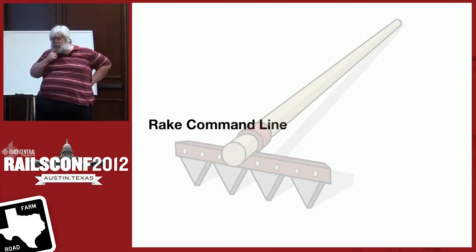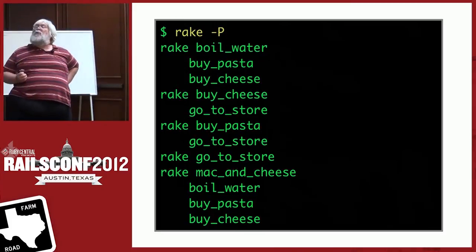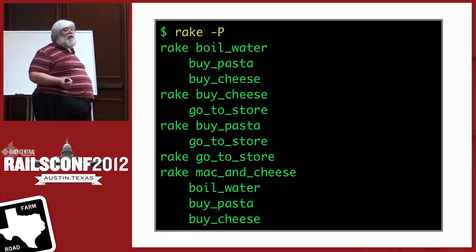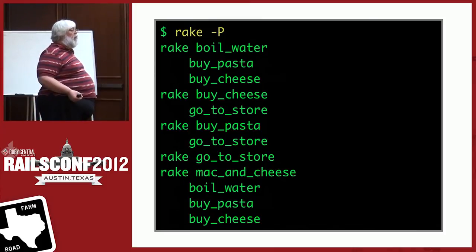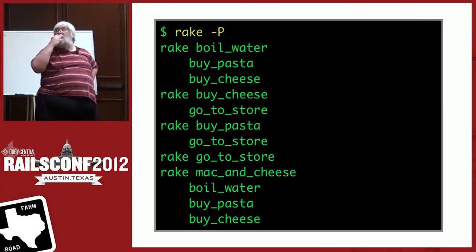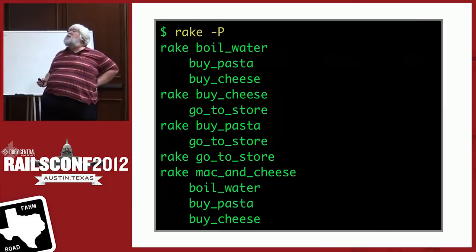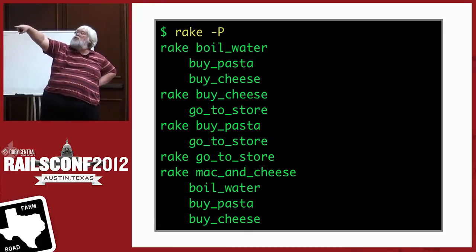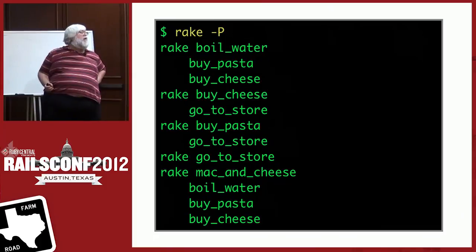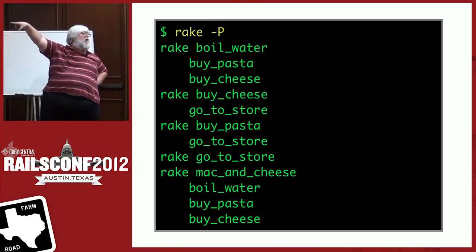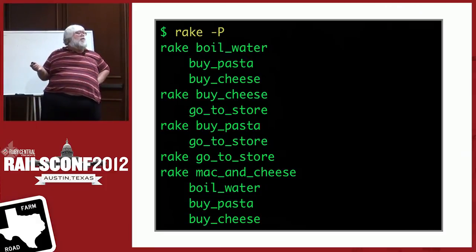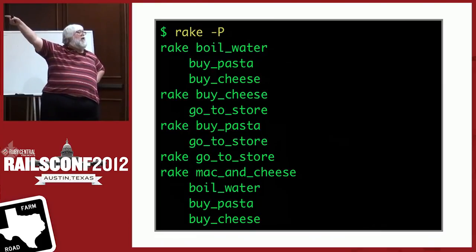Let's talk about rake's command line options. One that people don't know about is `rake -P` — it gives you a list of all tasks defined in your rake files and what they depend upon. So you can read: boil_water depends on buy_pasta and buy_cheese; buy_cheese depends on go_to_store; buy_pasta depends on go_to_store; go_to_store has no dependencies. You can use this to construct a graph of all tasks.